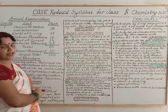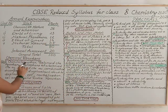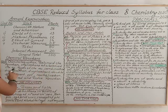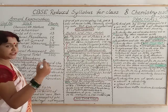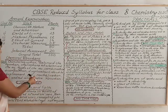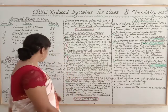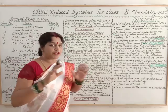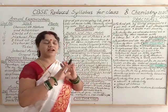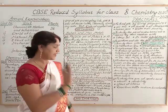First chapter is Chemical Reactions and Equations. The syllabus includes: chemical equations, balancing chemical equations, implications of a balanced chemical equation, and types of chemical reactions — combination, decomposition, displacement, double displacement, oxidation, reduction, precipitation reaction, neutralization reaction, and redox reaction (combination of oxidation and reduction). There is no change in this chapter.